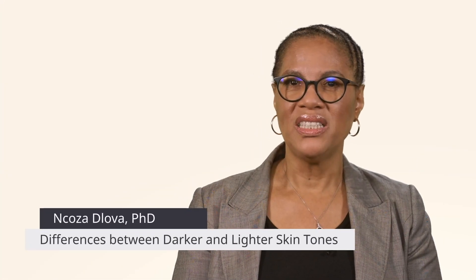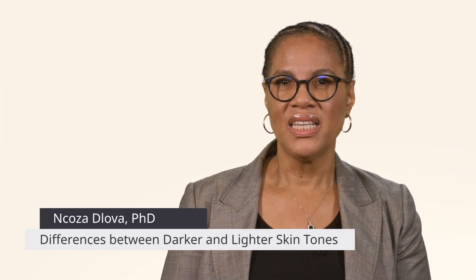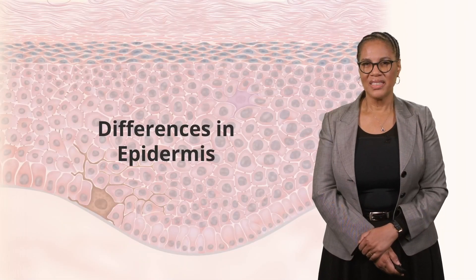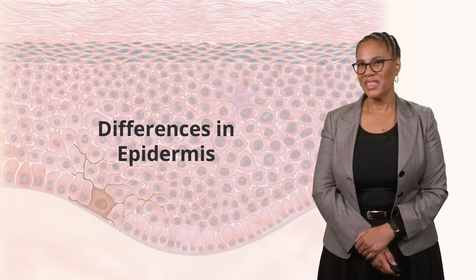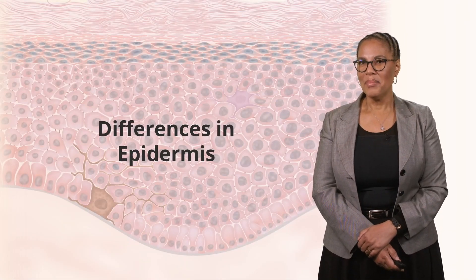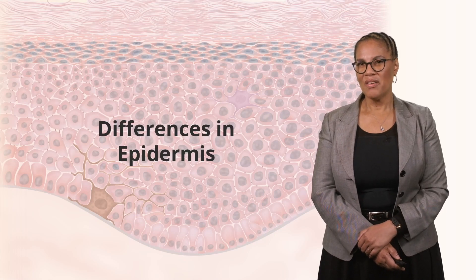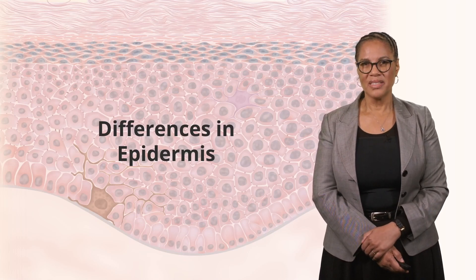We want to take a look at the differences in skin color, looking at the epidermis, the melanocytes, the dermis, and hair. If we focus on the epidermis, what are some of the differences in melanin-rich and melanin-poor skin types on the epidermis?